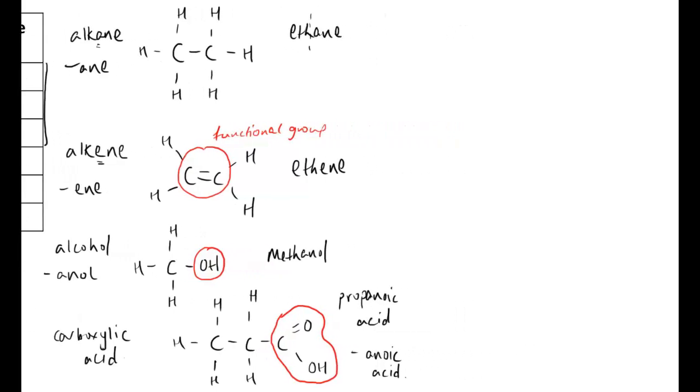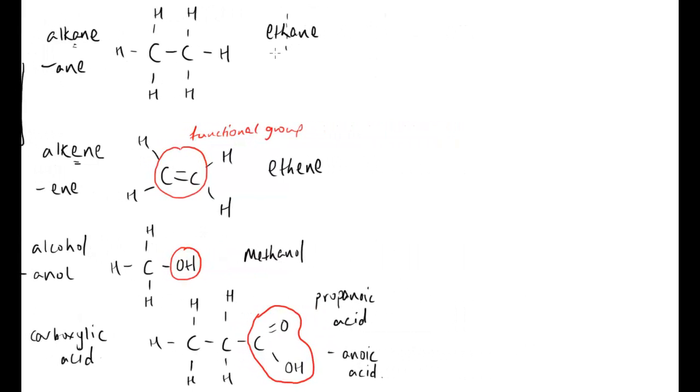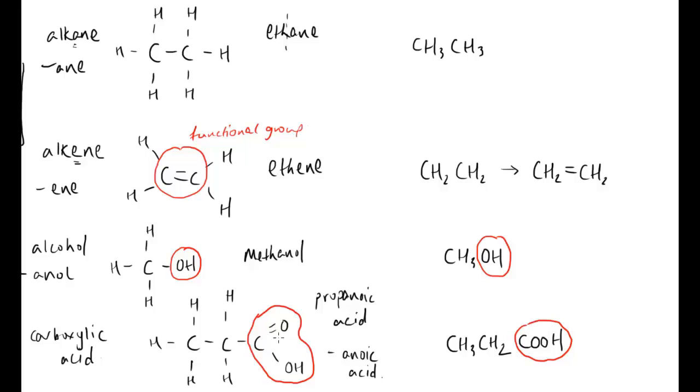We can also take these molecules and abbreviate them, so rather than drawing them out in what we call displayed formulae, we can condense it to what we call structural formulae. All that is is you take this displayed format and put it into simpler terms which is easier to write. You start with the carbons and write down what's attached. So this first one would be CH3CH3, the second one CH2CH2, and we can see the functional groups very present here.